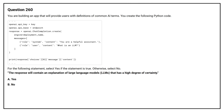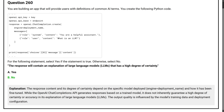Option A: Yes. Option B: No. The correct answer is Option B, No. The response content and its degree of certainty depend on the specific model deployed. The engine equals deployment_name and how it has been fine-tuned. While the OpenAI Chat Completions API generates responses based on a trained model, it doesn't inherently guarantee a high degree of certainty or accuracy in its explanation of large language models (LLMs). The output quality is influenced by the model's training data and deployment configuration.